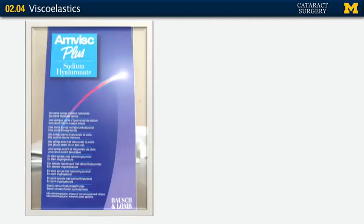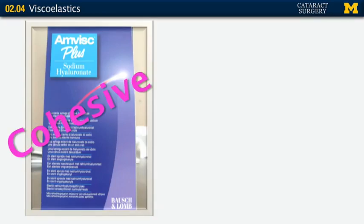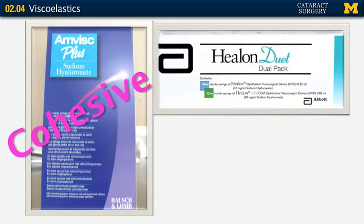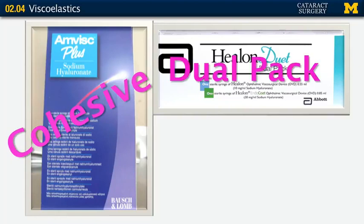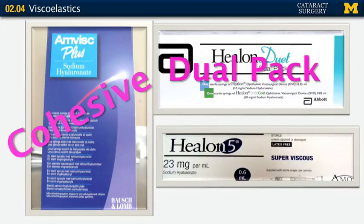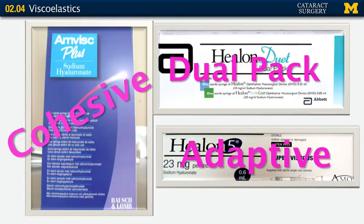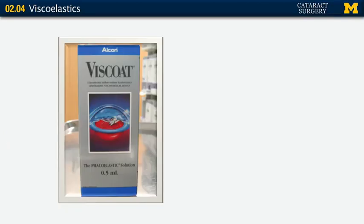AmVisc — cohesive or dispersive? If you said cohesive, you're right. Healon Duet — this is harder because it's a newer product. However, if you look right here, it gives you the answer: it's Healon and Healon Indicote, so it's a dual pack. Healon 5 — it says super viscous, but remember, it is viscoadaptive. It does both — cohesive and dispersive depending on your flow rates.